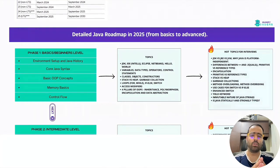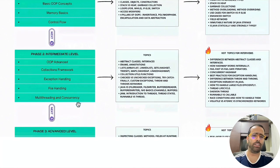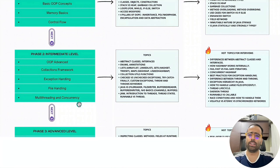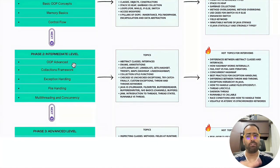Always try to go one or two levels deeper in whatever topics you are studying. The next phase is the intermediate level, which anyone can do regardless of experience. In the intermediate level, you should know advanced OOP — abstract classes, interfaces, where to use each, and the differences between them — plus keywords like static, blank final, and other advanced OOP constructs.